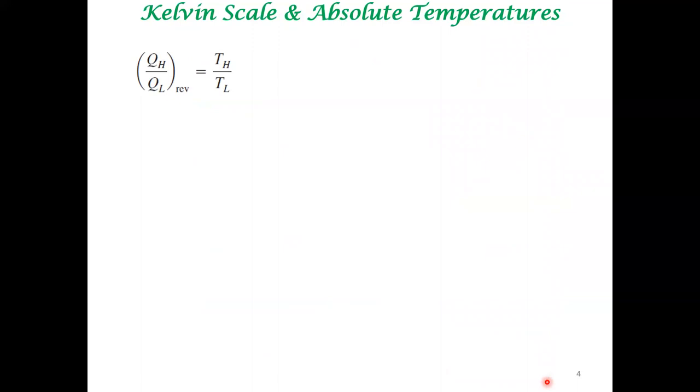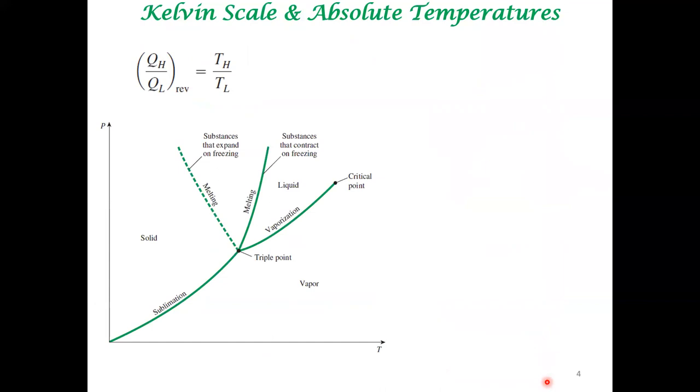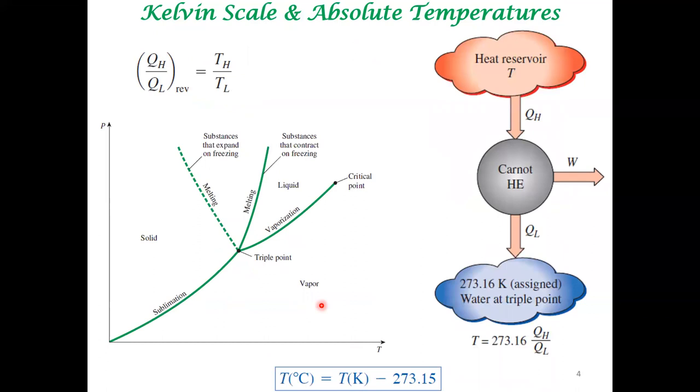Just knowing the ratio cannot give us an absolute value for temperature scale. What was decided was a particular temperature was decided for the triple point. Triple point was assigned a value of 273.16 Kelvin. That is water at triple point. This is the phase diagram of water. We have looked at this in the first half of the course. Please go back and look at it.